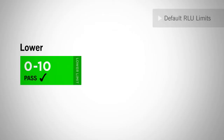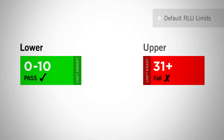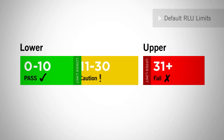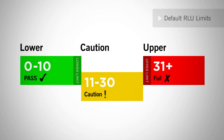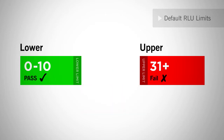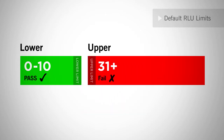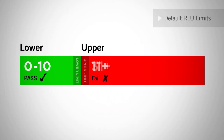Your meter comes preset with a default lower limit of 10 and an upper limit of 30. This creates a caution area of 11 to 30. If you wish to eliminate the caution area, set 10 as your pass limit and 10 as your fail limit.